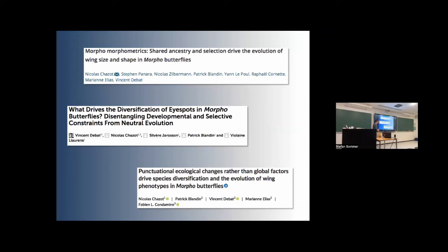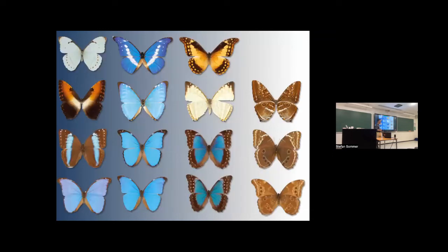I'm going to talk about one of these few datasets that exist for more complex traits. It's based on three papers we published, relying on the same dataset I generated during my PhD. This dataset focuses on a very charismatic group of butterflies you've probably seen: the morpho butterflies — large blue iridescent butterflies living in the Neotropics. Some of them are among the largest extant butterflies on earth.